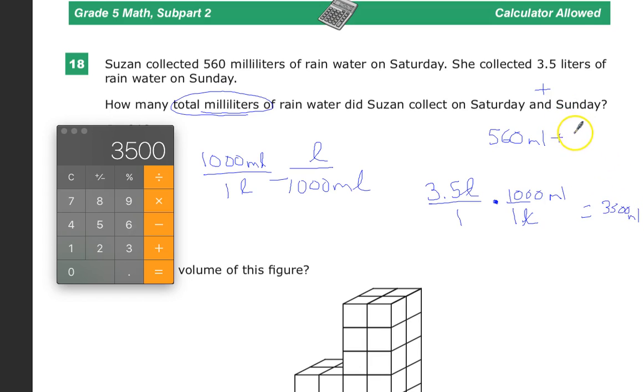Now that I have that, I just add it up here. So, I have Saturday's amount, Sunday's amount. They're in the same unit, so now I'm ready to combine them together. Since I already have this sitting over here, I'll just add 560, because addition is commutative, which means 560 plus 3,500 is the same as 3,500 plus 560. And it gives us 4,060 milliliters.